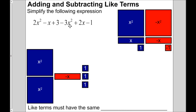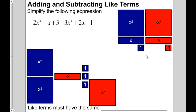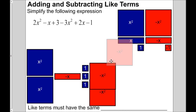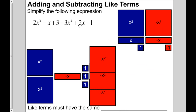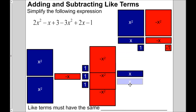For minus 3x squared, I'm going to use these minus x squared tiles. The next term is plus 2x, so I'm going to use these blue x tiles because it's positive. And then minus 1 — I'm going to use that minus 1 tile. So everything down here is just a representation of what you see up there.